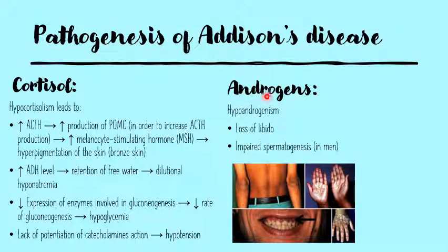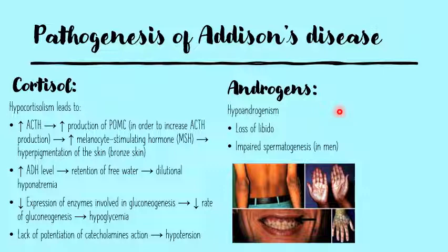Androgens too may be affected by Addison's disease if the zona reticularis has been affected. However, this is not very commonly observed. When it does occur, loss of libido and impaired spermatogenesis are the symptoms.